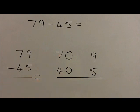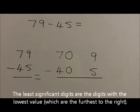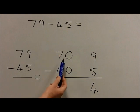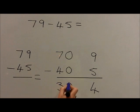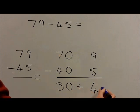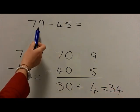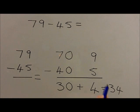These 2 are equal, so we add our equal sign and we are still doing a subtraction. We then start with the least significant digits, saying 9 take 5 is equal to 4. Then we do the 10s so that 70 take 40 is equal to 30. We then add back the 2 partitions so that 30 plus 4 is equal to 34. Therefore, 79 take 45 is equal to 34.